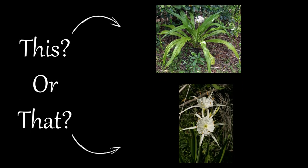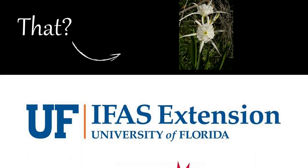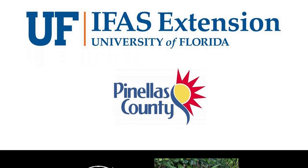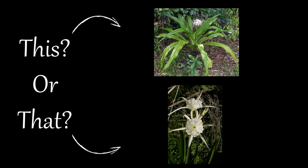Welcome to the This or That video series, produced by UF-IFAS Extension Pinellas County. This series helps citizens and visitors correctly identify commonly mistaken species of plants and animals. Today, we are going to explore two similar native plants to Florida: the spider lily and the swamp lily. Here are a few tips to help you the next time you encounter one of them. For these two species, it's important to note the leaves, flowers, and habitat.